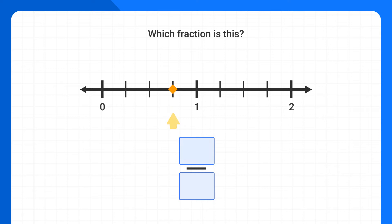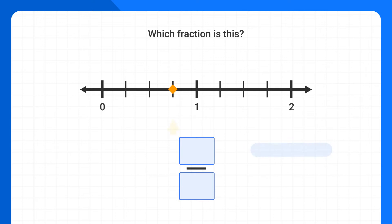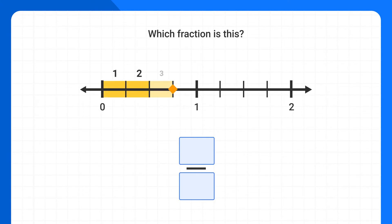The numerator of my fraction will be how many shaded parts I have. If I'm at this dash, it means all of the parts up until this dash are shaded. I can count up that there are one, two, three shaded parts, so my numerator is three.